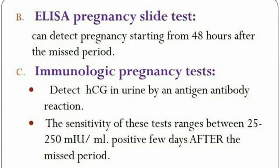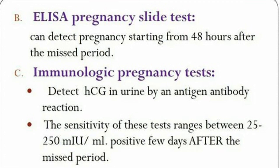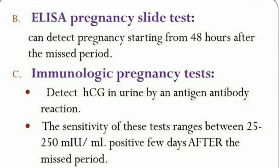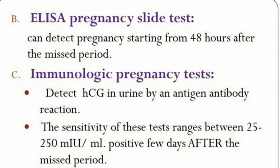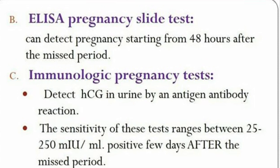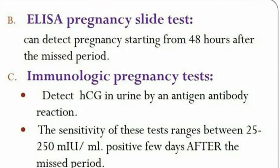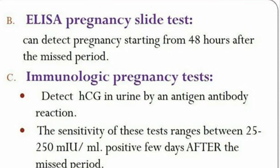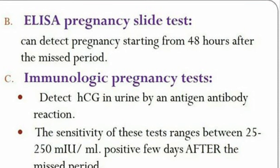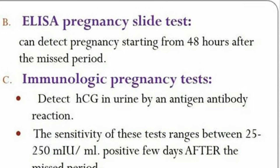Another pregnancy test is the ELISA pregnancy slide test, which can detect pregnancy starting from 48 hours after the missed period and is a very sensitive test. Finally, the immunologic pregnancy test detects HCG in urine by an antigen-antibody reaction. The sensitivity of this test ranges between 25 to 250 milli-international units per milliliter, with a positive result a few days after the missed period. Results over 25 milli-international units per milliliter indicate that the individual is pregnant.